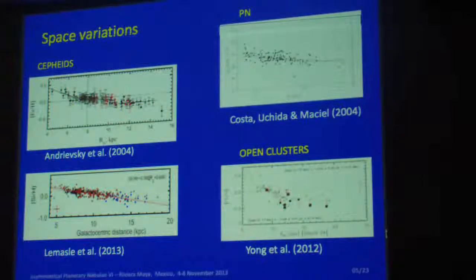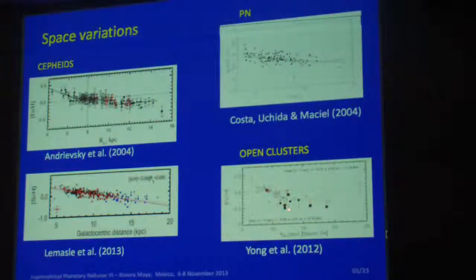There are space variations. For example, this is the work we have on planetary nebulae. We have shown that the gradients try to flatten at larger galactocentric distances. The same thing we find in Cepheids. We also have work like in HII regions. We didn't find any changes at all, but if you use open clusters these differences become very important. So apparently there is flattening of the gradient as you go out in the galaxy.